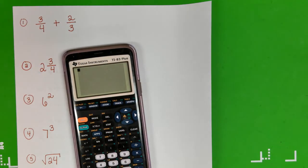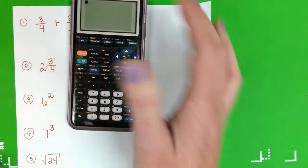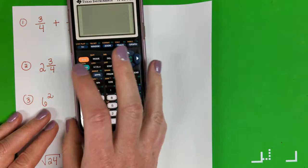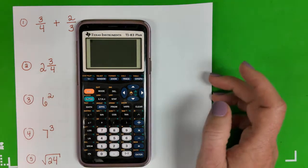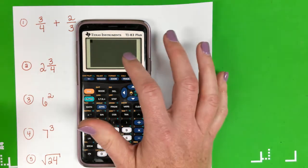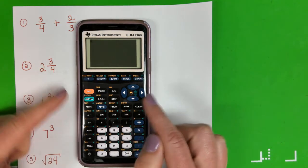Okay, so the first kind of important buttons I wanted to show you. We've got the on button, obviously. I also want to show you sometimes when you turn your calculator on, sometimes your screen is too dark or too light, and so you can change the brightness of your screen.